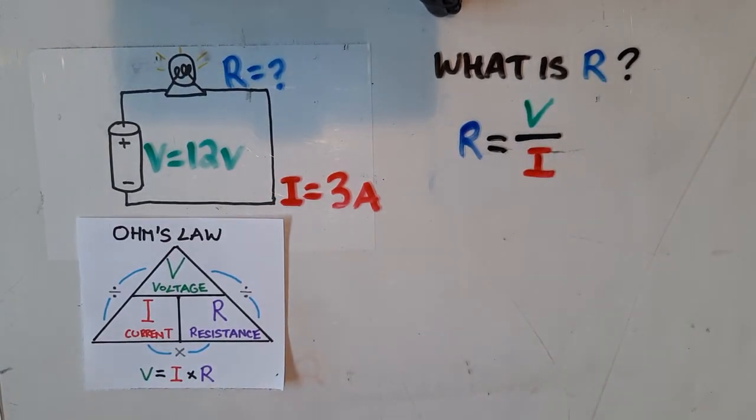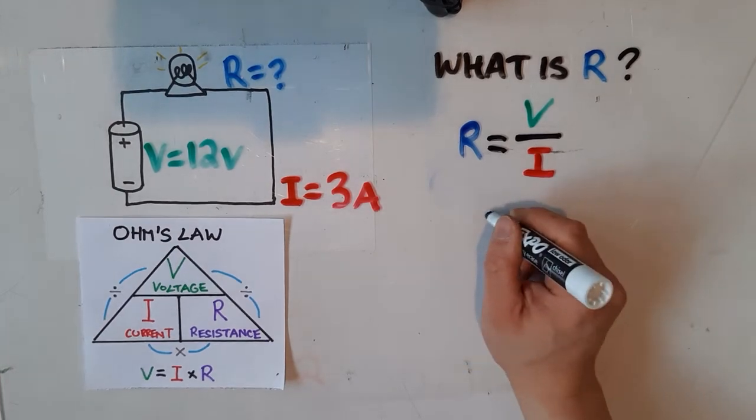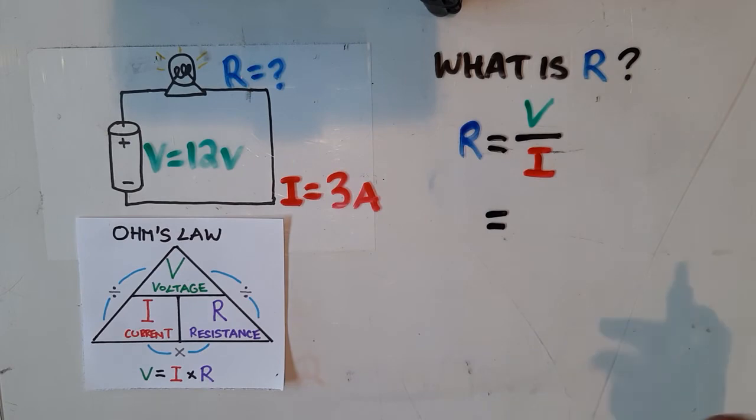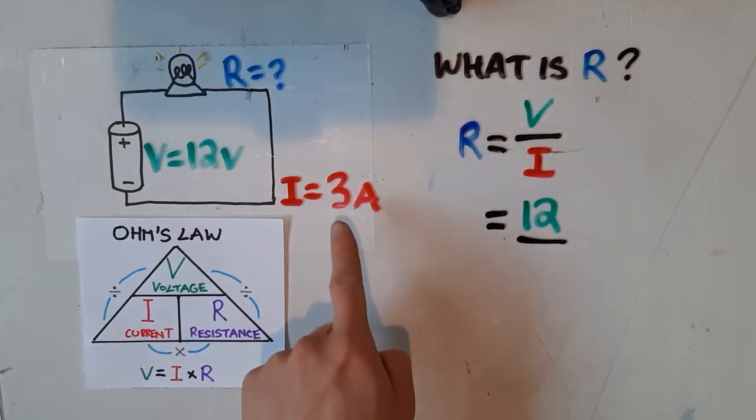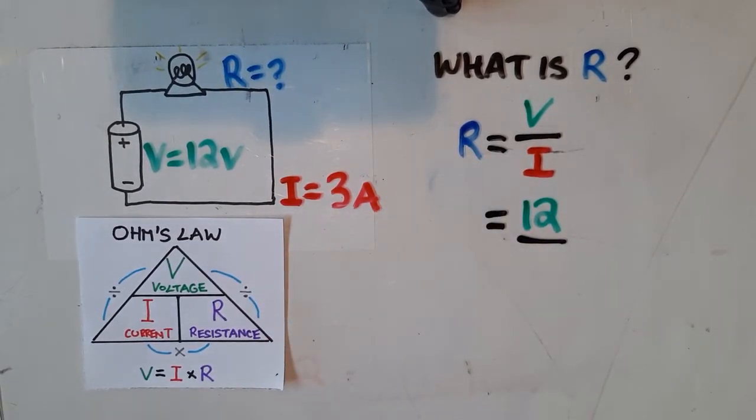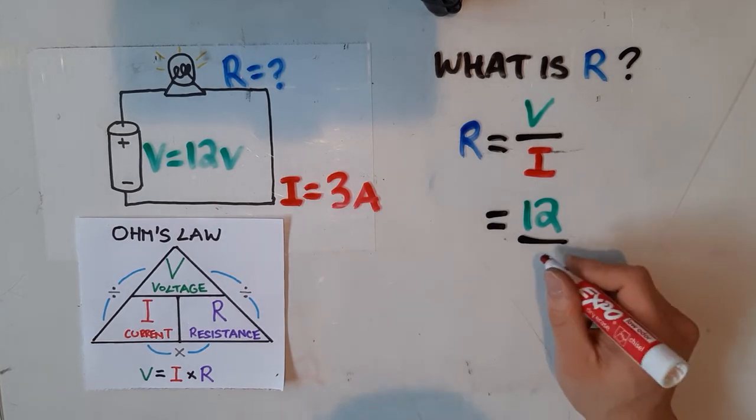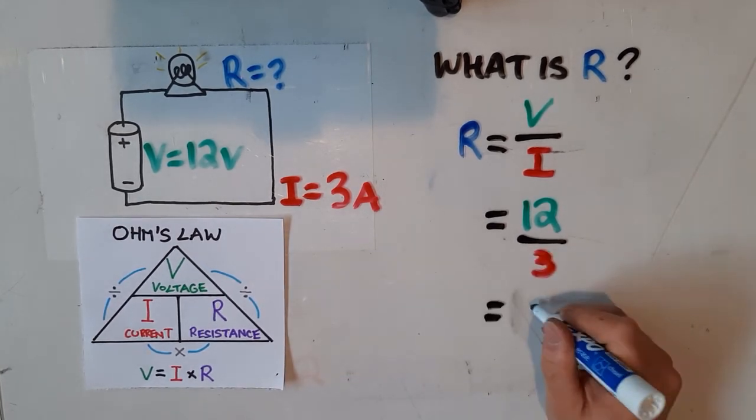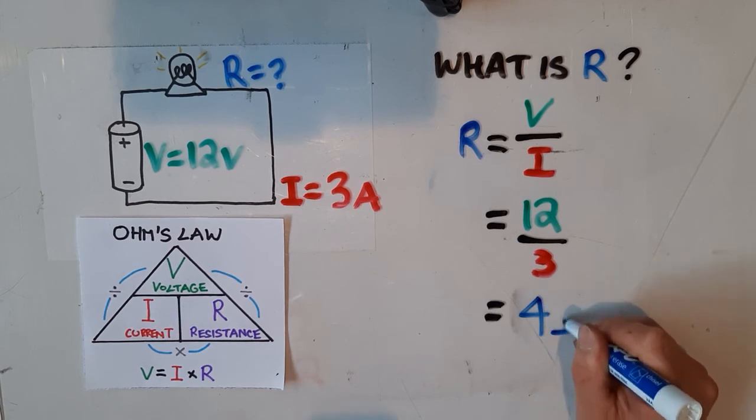The next step, I'm going to plug in those values. So we know that the voltage is 12 volts, so I'm going to put 12 on the top, divided by current. And we know current is 3 amps, so I'm going to add 3 on the bottom. 12 divided by 3 is 4, so that's 4 ohms.